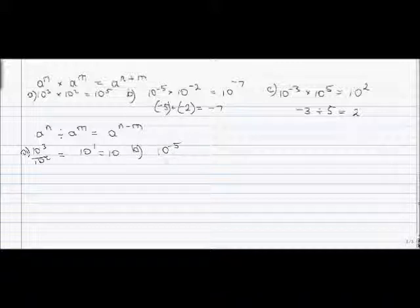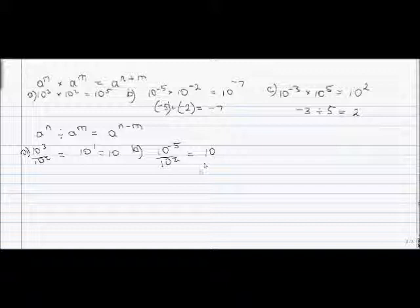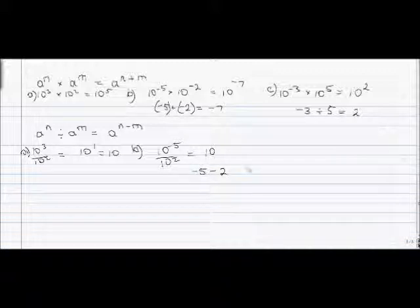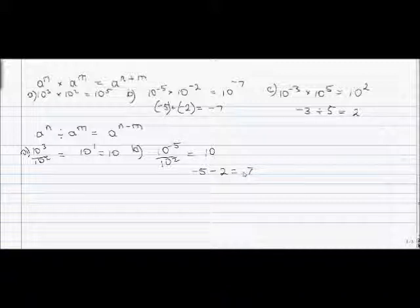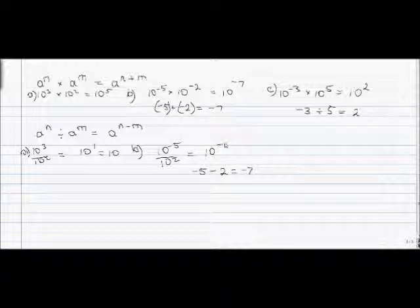Example B: 10 to the negative 5 divided by 10 to the second. We keep the same base 10, and subtract the exponents: negative 5 minus 2. Notice that 5 and 2 have the same sign after applying the subtraction, so we add: 5 plus 2 gives 7, and we keep the overall negative sign. So the answer is 10 to the negative 7.